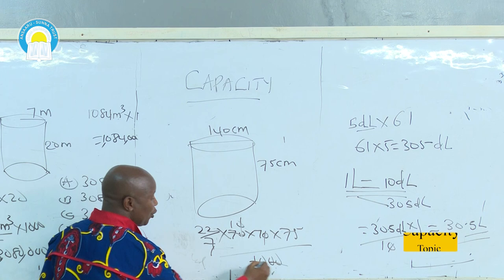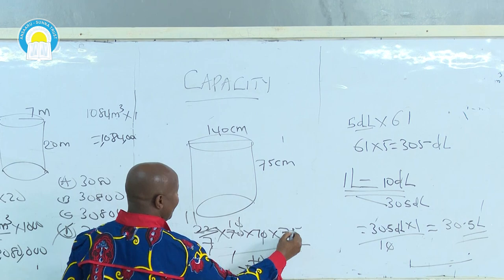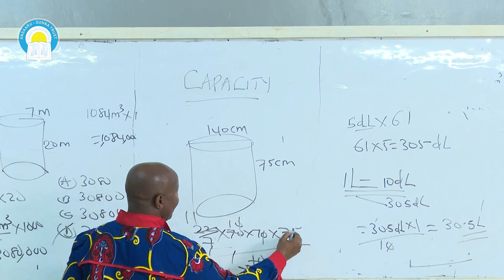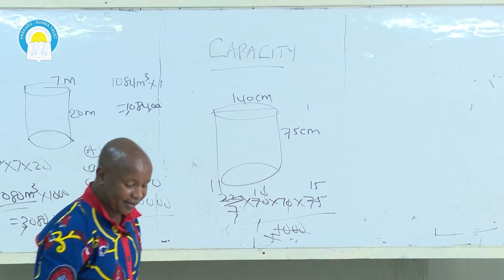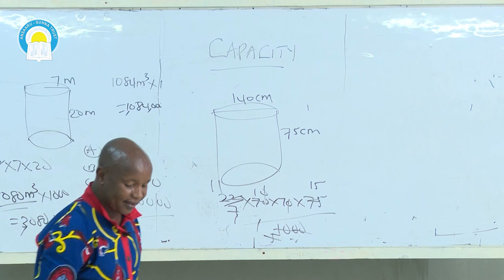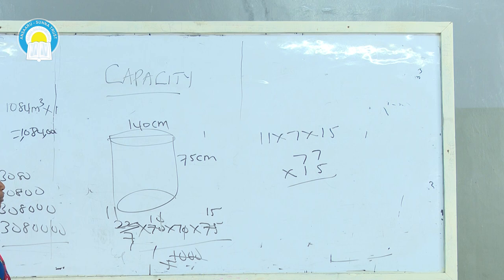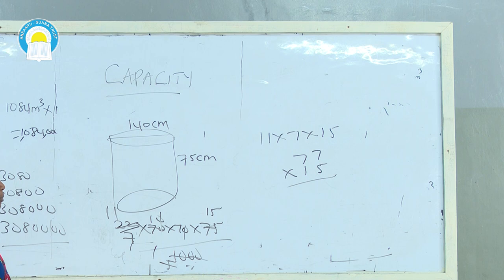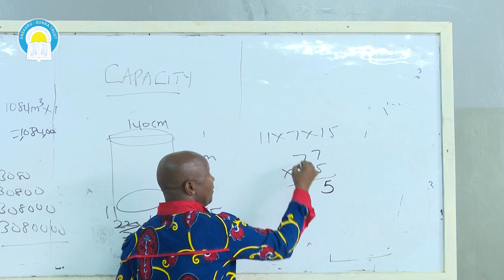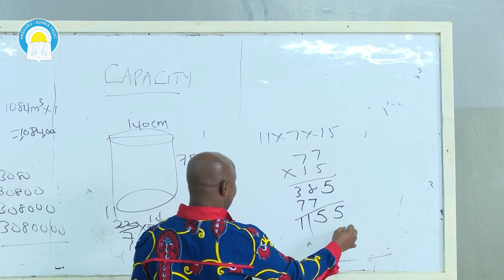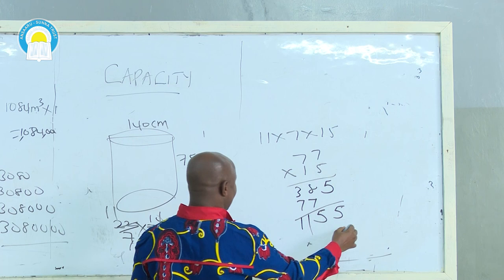After cancellation, we have 11 × 7 × 15. 11 × 7 = 77, then 77 × 15: 7 × 5 = 35, carry 3; 7 × 7 = 49 + 3 = 52... giving us the answer of 1,155 liters. That is the capacity of the tank in liters.